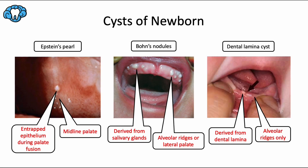First, we're going to start with three intraoral inclusion cysts. Inclusion cysts are generally characterized by being lined with epithelium and containing a substance like keratin that's been trapped inside. Epstein's pearls are small, whitish-yellow cysts that occur at the midline palate, and they are caused by fusion of the palatal shelves where epithelium is trapped underneath at the median palatine raphe. These are seen in about 65 to 85% of newborns, so they're actually very common.